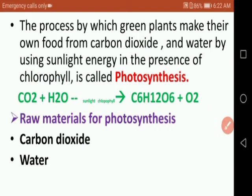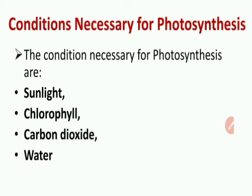The raw materials for photosynthesis are inorganic substances — carbon dioxide and water — which are easily available in the environment. The conditions necessary for photosynthesis are: first, sunlight; second, chlorophyll; third, carbon dioxide; and fourth, water. If any one of these is absent, photosynthesis is not possible.